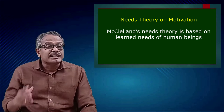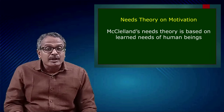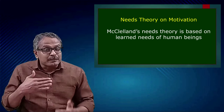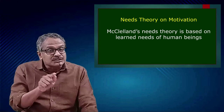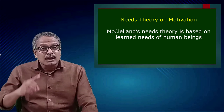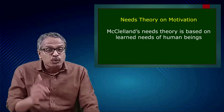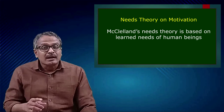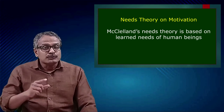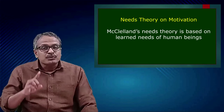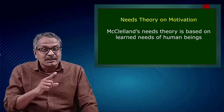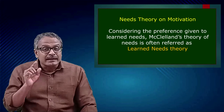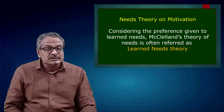McClelland's needs theory is based on learned needs of human beings. Learned needs are those which generate out of social life. Needs for food and water are innate needs — present within human beings by birth, with no need to teach about them. McClelland's theory is about those needs aroused out of learning. The need for jewellery, a two-wheeler, a job, or a professional degree is not an inborn need — these arise because of social life, and may be acquired from friends, parents, teachers, and the social environment. Because of this emphasis on learned needs, McClelland's theory is often referred to as the learned needs theory.